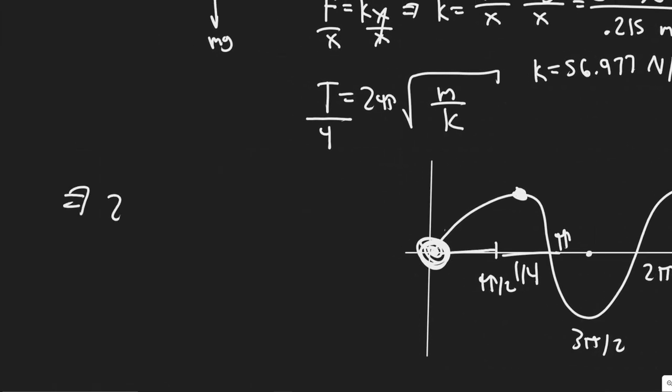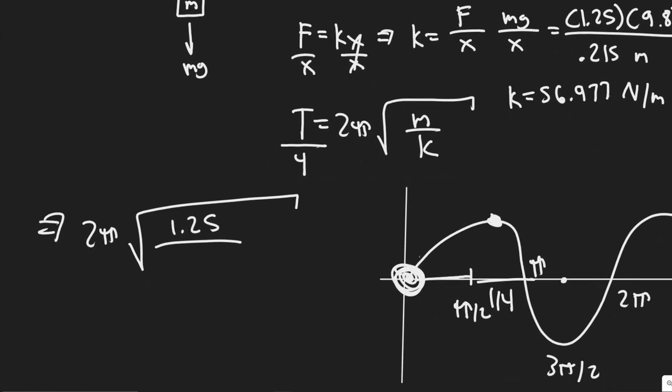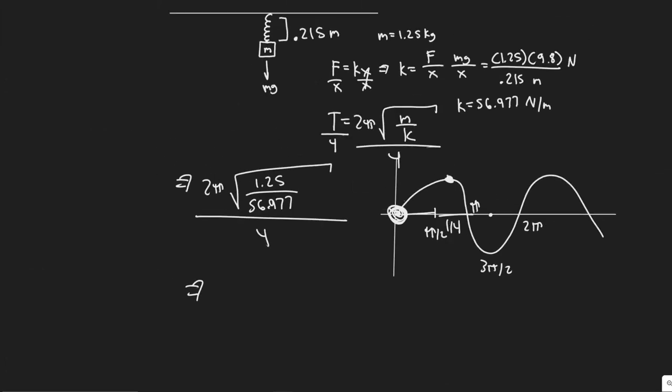And it's really just a matter of plugging in the value now. So 2π divided by the mass, which was 1.25, and then you would divide by k, which is 56.977. And as I said before, we're dividing this value by 4. So we've got to divide it by 4 like this. Our answer is basically just the period divided by 4. So that's why we're dividing by 4 here. So let's go ahead and plug it in now. 2 times π multiplied by the square root of 1.25 divided by 56.977, and then you divide this thing by 4.